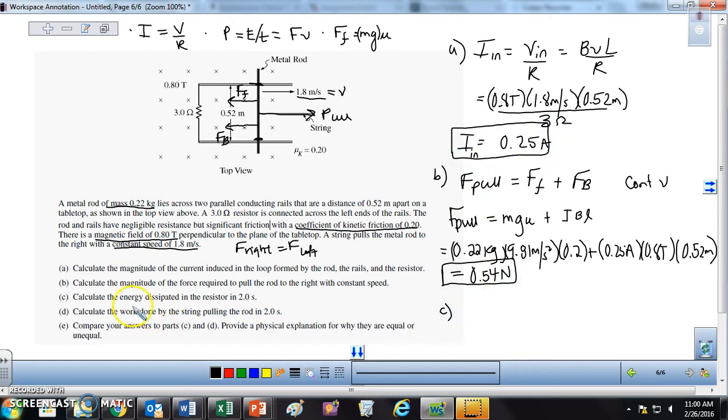So part C, calculate the energy dissipated in the resistor in 2 seconds. So what we can do is find the electrical energy in this resistor. So when calculating the electrical energy, we can use IV, I squared R, etc. Any of those would be sufficient to solving for this. So let's find the electrical energy dissipated in 2 seconds. So what I'm going to do is find the power, and then once I find power, it's going to be equal to the energy per time. So if I want my energy, it's going to be power times time.